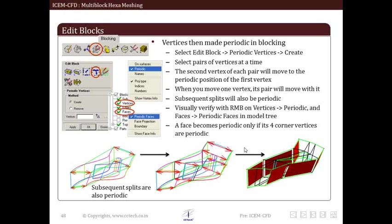Now we will see periodic vertices option. In many simulation problems, we need to use periodic boundary condition. For doing this, we need to specify periodic at pre-level. In order to define boundary as periodic, we need to have pair of periodic vertices. The periodic vertices option within edit block allows us to make selected pair of vertices into periodic nodes. While doing this, order of selection is very important because second vertex of each pair will move to periodic position of first vertex.